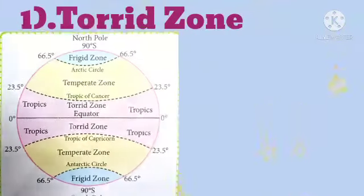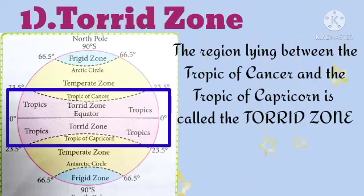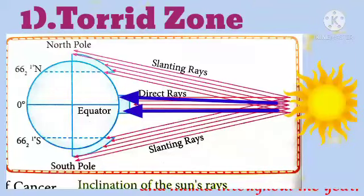First, the region lying between the Tropic of Cancer and the Tropic of Capricorn is called the Torrid Zone. The climate of this zone is hot and humid throughout the year. Please remember, this zone receives vertical rays of the sun, hence the climate is hot and humid.